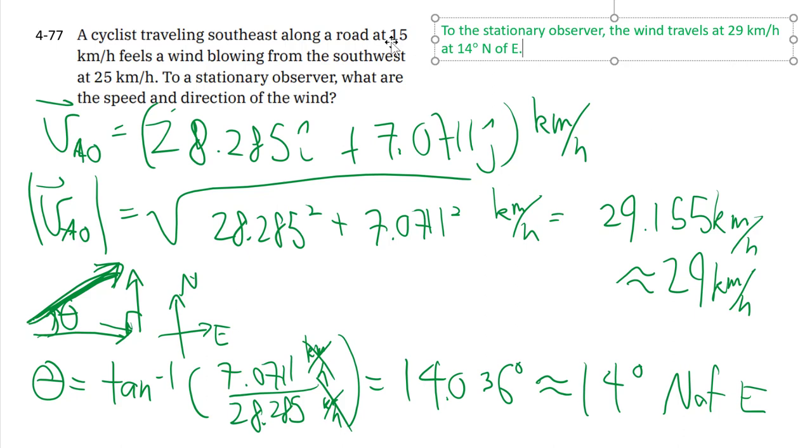The math here, not terribly complicated. Very standard vector addition stuff. Break down the components, sum, and that's it. But it's really the kind of working through the grammar and the English to get the different velocities and put them in the right spots.